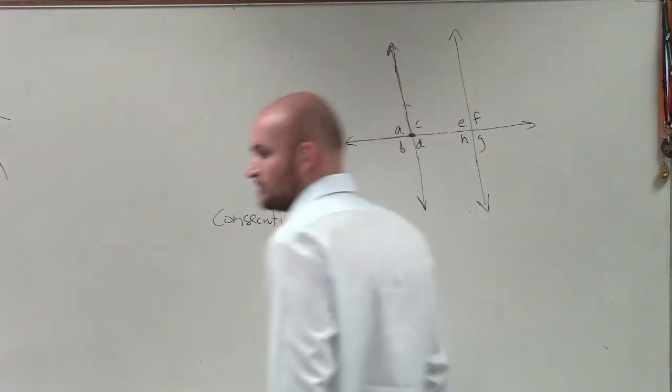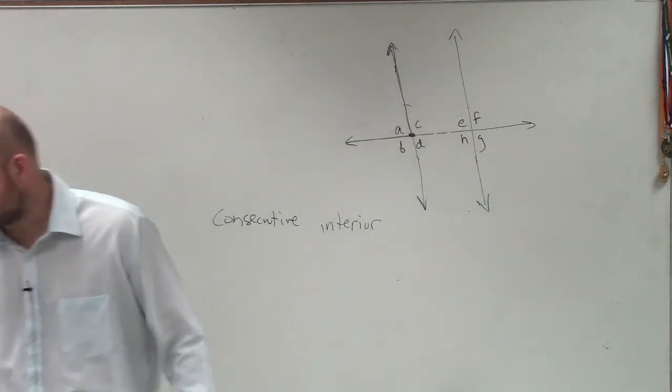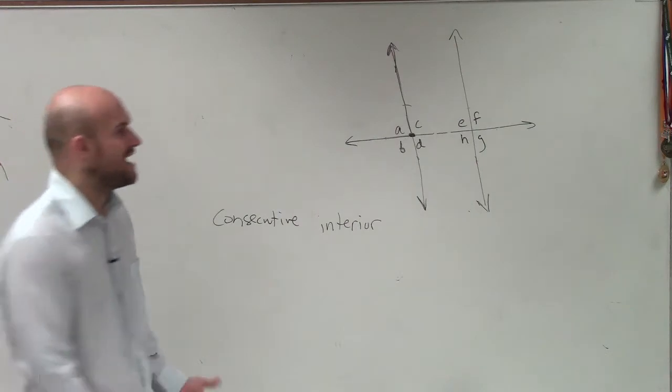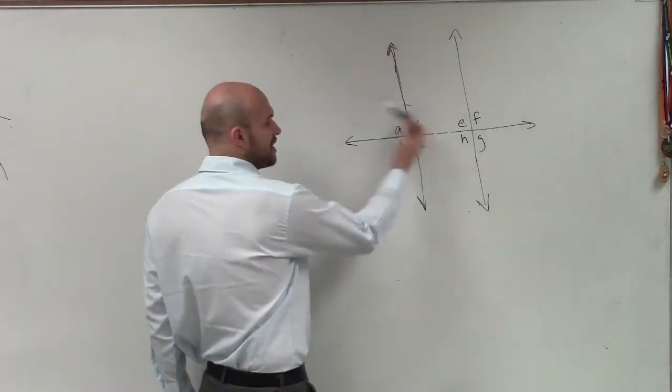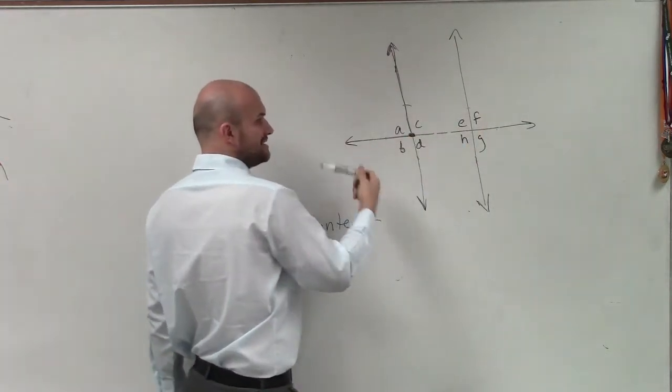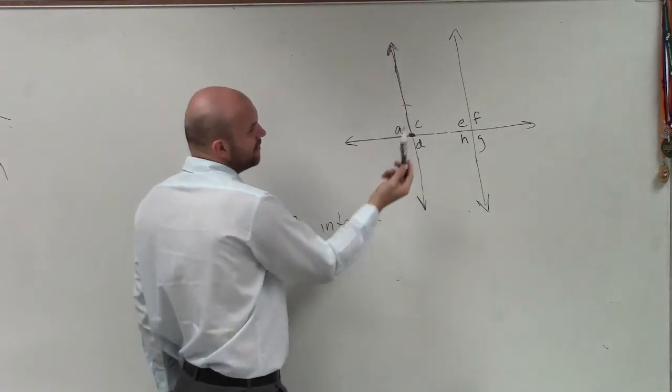I've seen a lot of students that decided to write in this new definition of consecutive exterior. Guys, exterior are angles that are going to be outside these two lines. Is it possible to have two consecutive? Well, actually,